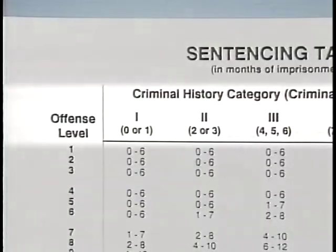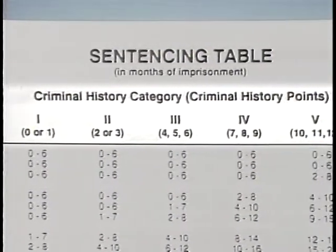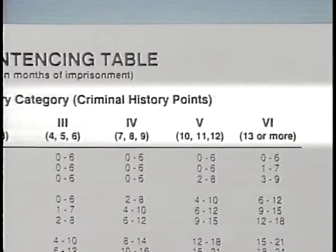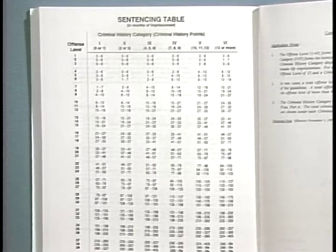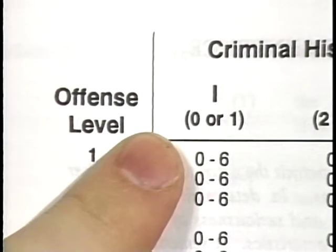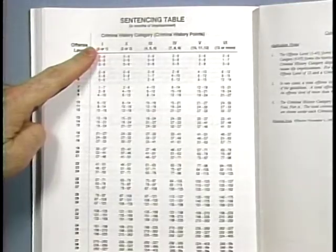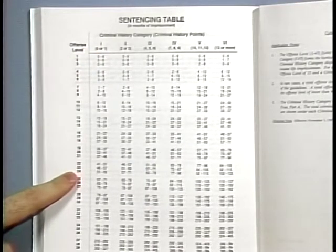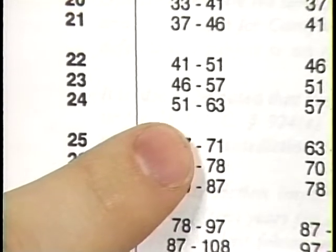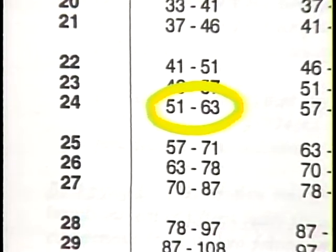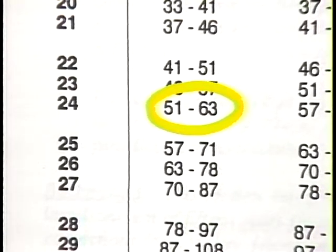Applying the acceptance of responsibility adjustment results in a deduction of two points from Smith's base offense level, leaving Smith with an adjusted offense level of 24. Next, I determine the appropriate criminal history category. The sentencing commission has established a system that assigns numerical values to the offender's prior criminal convictions. Since this is Smith's first conviction, she has no history of criminal convictions, receives no points, and falls within the lowest criminal history category — category one. Finding the intersection of offense level 24 and criminal history category one in the sentencing table shows a sentencing range of 51 to 63 months.